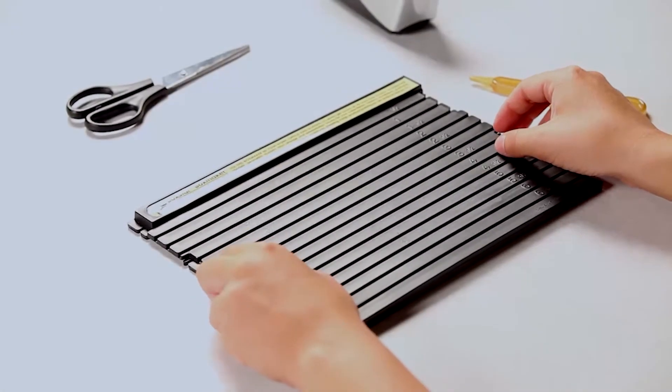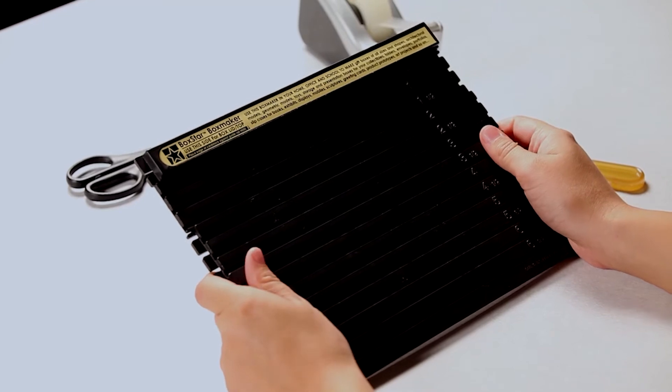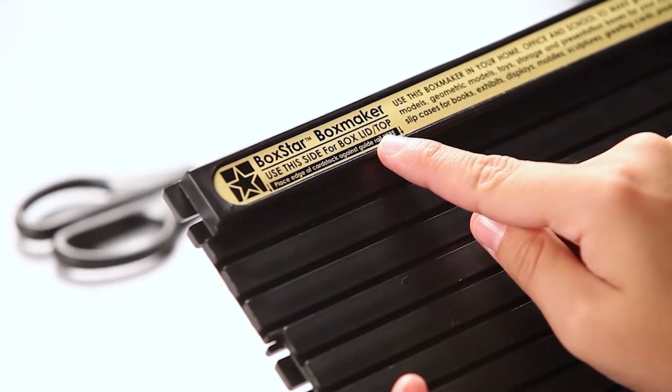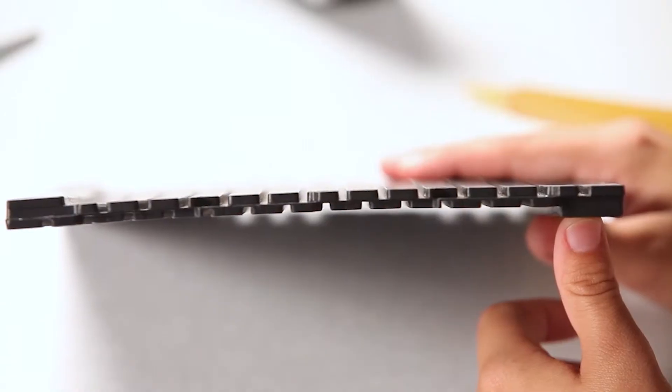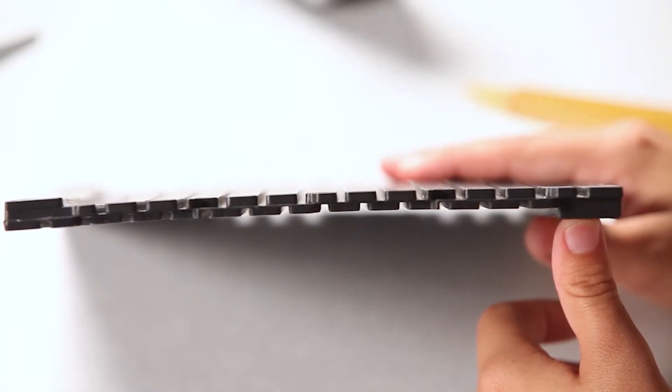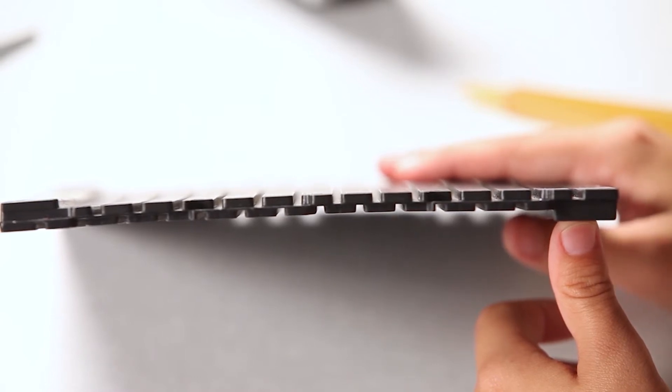The box maker has two sides that look similar, however, they are slightly different. One side is labeled top/lid and the other is labeled bottom. The grooves on the two sides are slightly offset so that the top of the box is slightly larger than the bottom and allows the top and bottom to slide together.